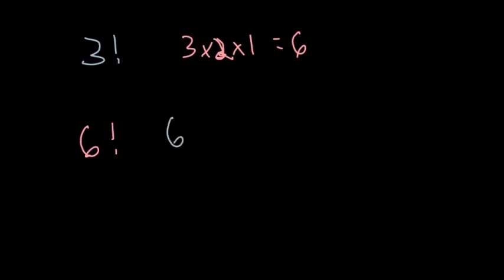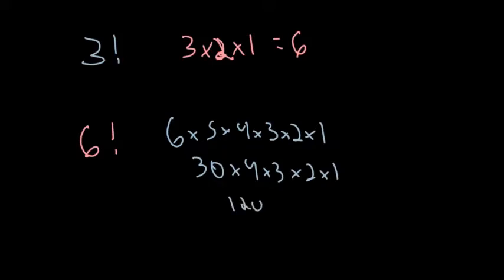Six factorial would be six times five times four times three times two times one. So six times five is thirty times four times three times two times one. Thirty times four would be 120 times three times two times one.